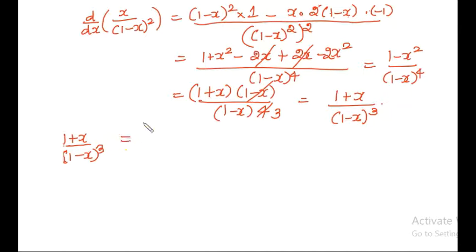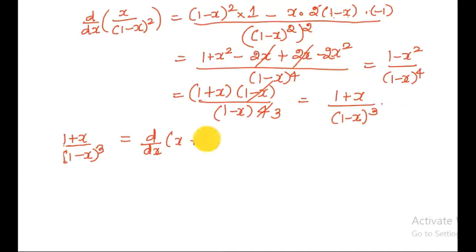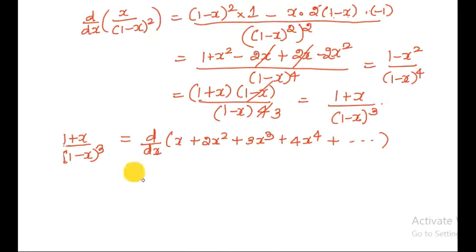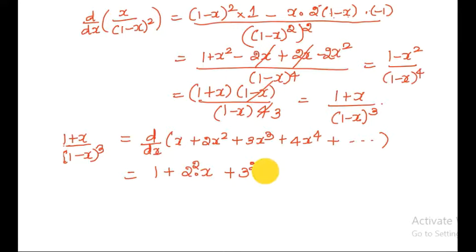On the right-hand side, the derivative of (x plus 2x squared plus 3x cubed plus 4x to the 4th, and so on) is 1 plus 4x plus 9x squared plus 16x cubed, and so on. This is in the form A0 plus A1 times x plus A2 times x squared plus A3 times x cubed.